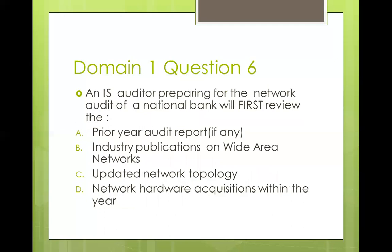Question six: an IS auditor preparing for a network audit of a national bank will first review: the prior audit report, industry publications on wide area networks, updated network topology, or network acquisitions within the year. You need to look at the network topology — the network diagrams showing the nodes, links, connectivity, and protocols being used. Prior audit reports give stale information. Industry publications don't give organization-specific details. Network acquisitions within the year miss assets acquired in prior years. So the best answer is C — updated network topology.